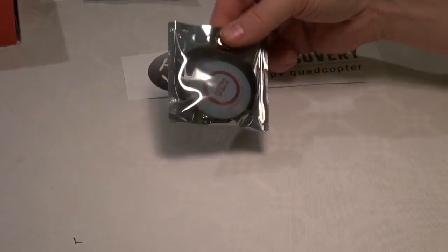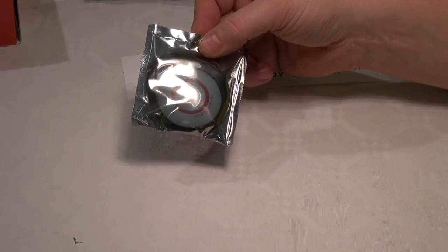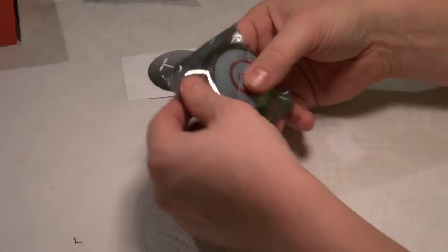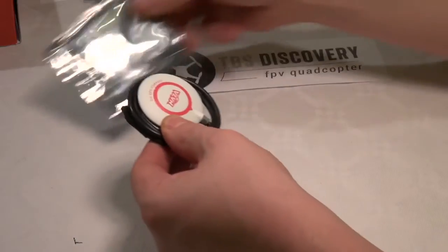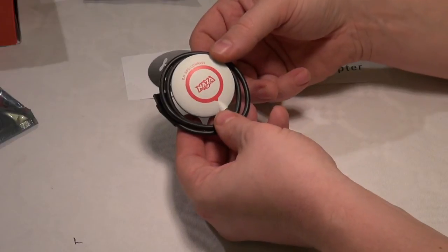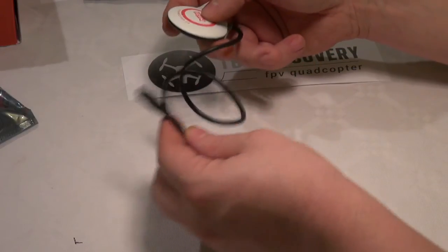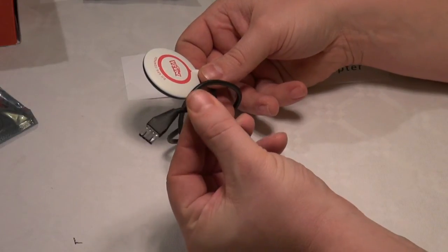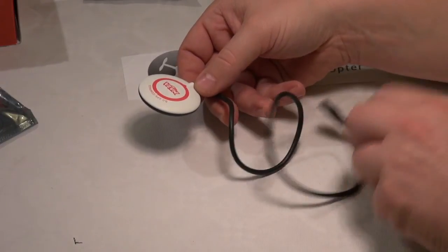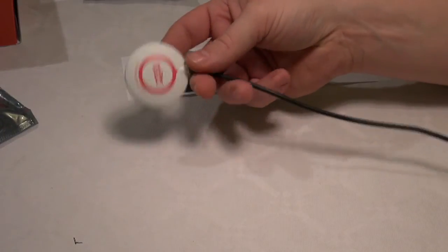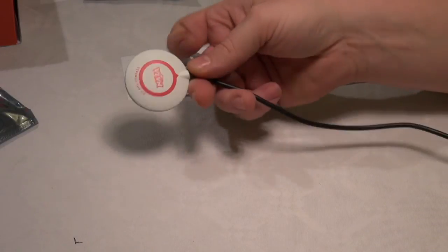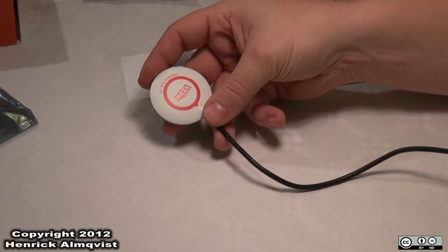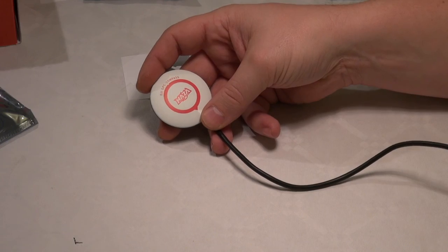And this is the NAZA GPS and compass. Let's open up the ESD bag and have a look what's inside. It's the GPS, cable and connector for connecting to the controller. The bottom side is black and the top has the logo. More about this in the configuration section.